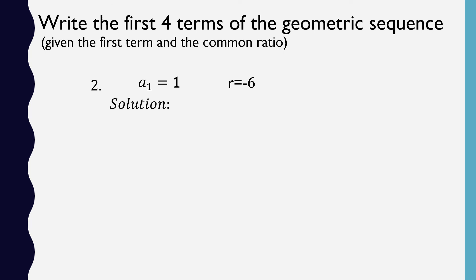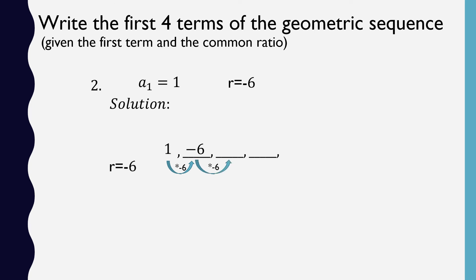For the next problem, write the first four terms given the first term is 1 and the common ratio is negative 6. Starting with 1, multiply by negative 6: 1 times negative 6 is negative 6; negative 6 times negative 6 is 36; 36 times negative 6 is negative 216. So the first four terms are 1, negative 6, 36, and negative 216.